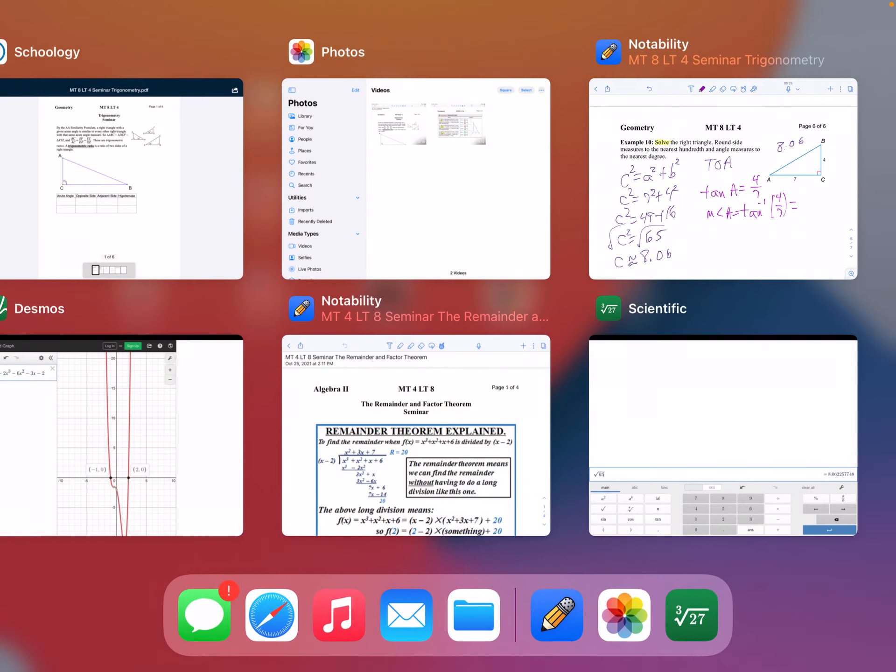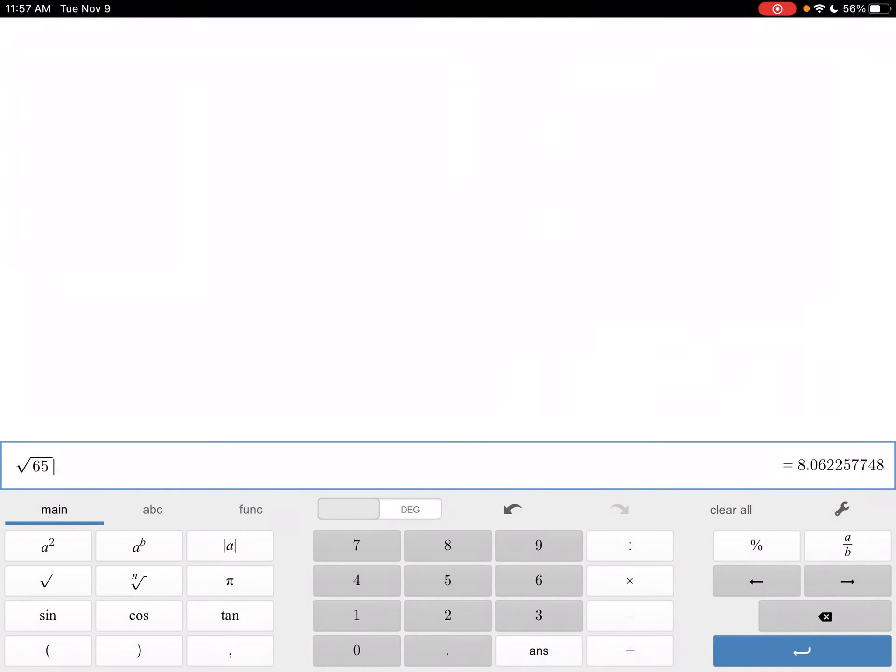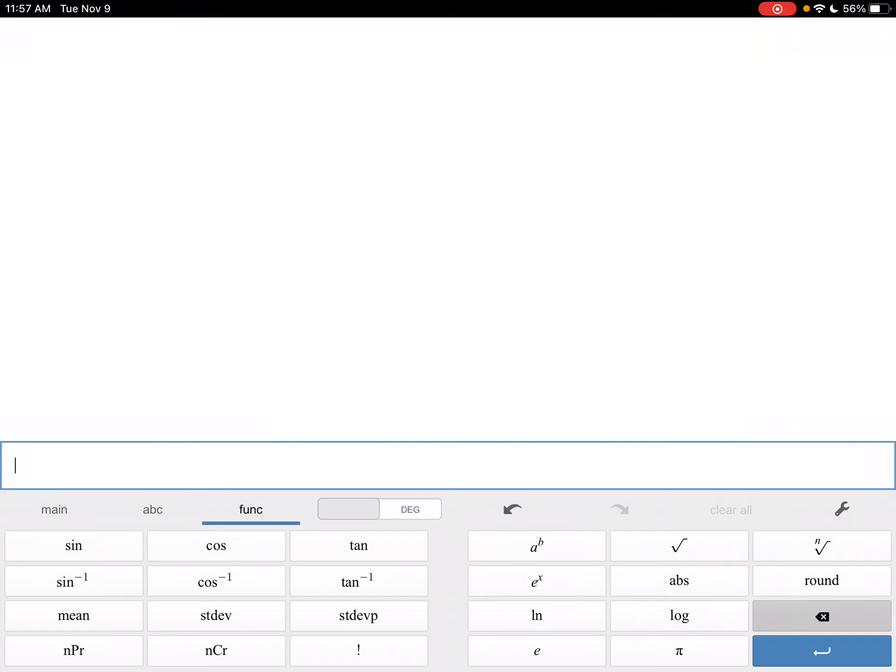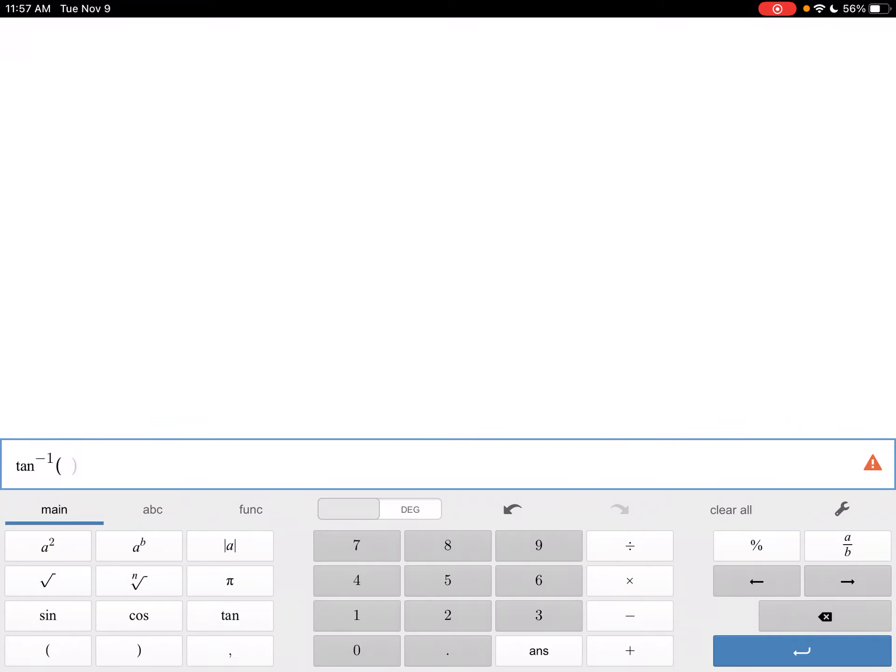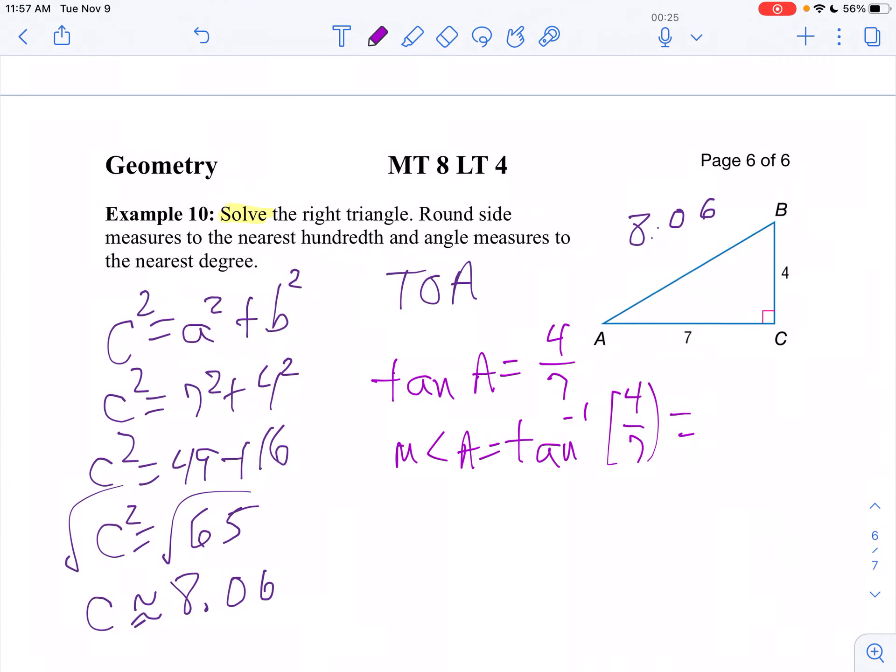So to find that angle, I'm going to clear this out. I'm going to hit my function. I'm going to do the inverse tangent of 4 divided by 7. And that turns out to be 30 degrees. So the measure of angle A is around 30 degrees.